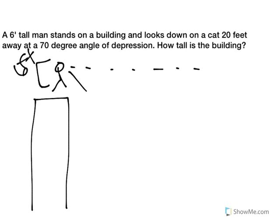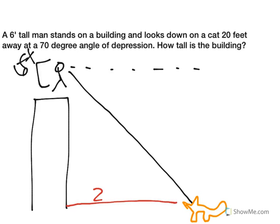This is our horizontal. And this is his line of sight looking down at our disfigured tabby cat. And the tabby, we know, is 20 feet away from the building. So what we're trying to figure out is how tall the building is.